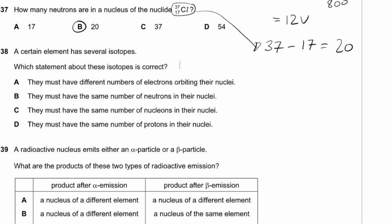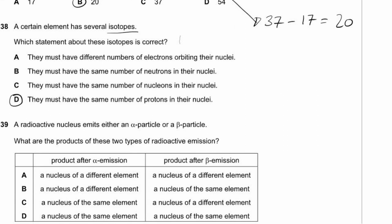Question 38. Isotopes have the same number of protons but different numbers of neutrons. Option D is correct: isotopes must have the same number of protons. They don't need the same electrons (they could be ionized), the same neutrons, or the same nucleons. Same proton number, different neutron number.